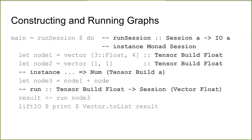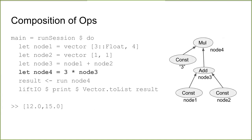From an audience question: how come you don't have to declare a type on the second vector? We get type inference — the plus operator enforces that node 2 has the same type as node 1. You can go further and compose these operations. If you take the previous result and multiply it by 3, because tensors are instances of `Num`, you can use the numeric literal 3 and the times operator to construct another node, which is the same graph with multiplication on top, referencing a constant 3. Running all that gives us 3 times the previous result, which is 12.